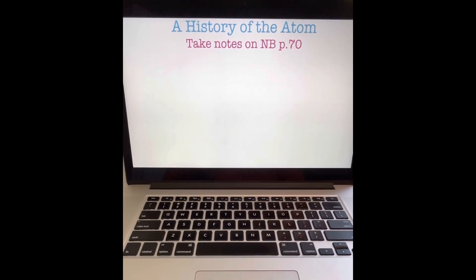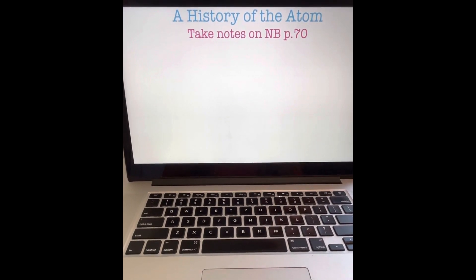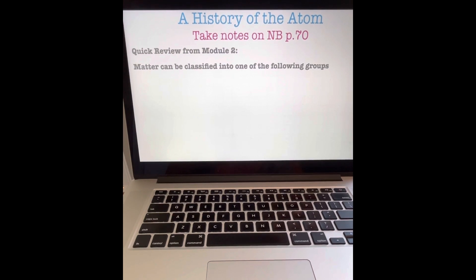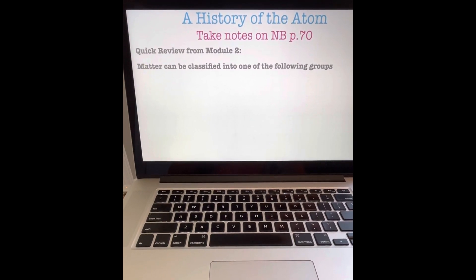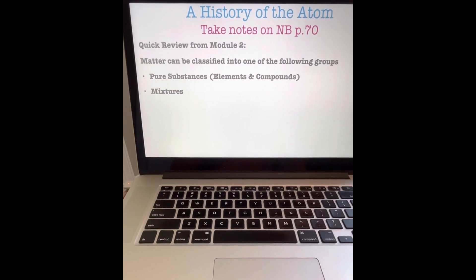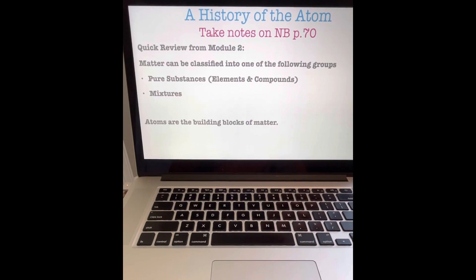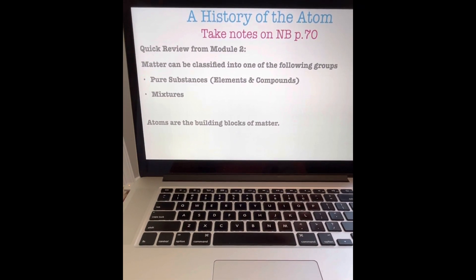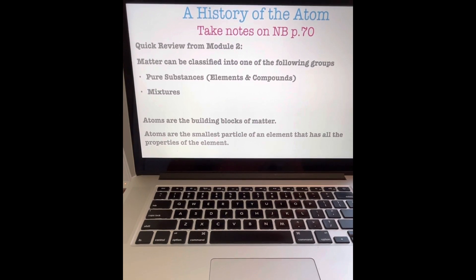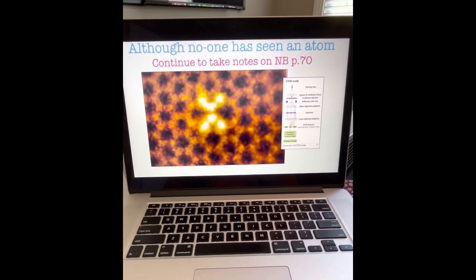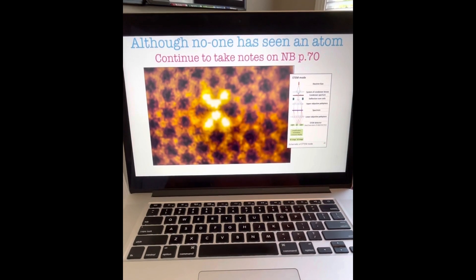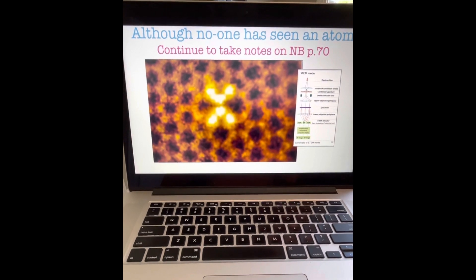A History of the Atom — open up your notebook to page 70 and start to take some notes. Let's quickly review Module 2, as some of these words are going to be useful. Matter can be classified into pure substances — elements and compounds — and mixtures. Atoms are the basic building blocks of matter and are the smallest particle of an element that still has all the same properties of that element.